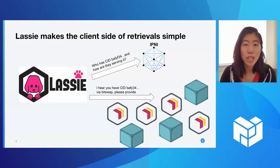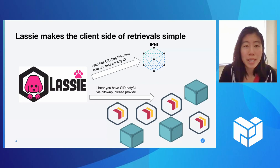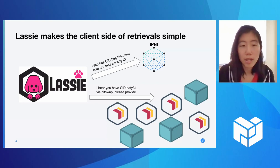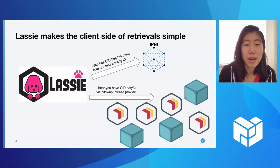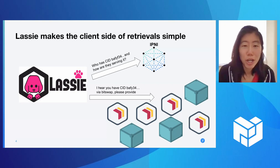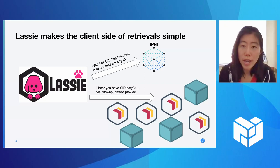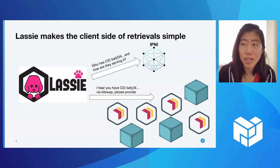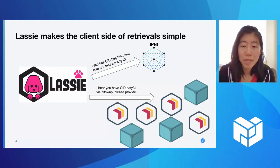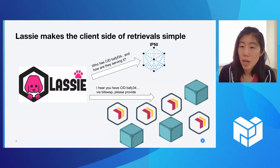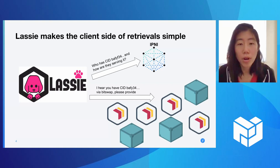To show a bit more about how it works with this diagram — shout out to Lauren — basically on the client side you have the CLI tool, Lassie. How it works right now is that you give it a CID, in this case an example CID like BAFY..., and you just ask Lassie to fetch this CID. Lassie will actually go and query the IPNI, the Interplanetary Network Indexer that Yvonne shared about earlier. IPNI will come back with a group of providers — both IPFS and Filecoin providers — and which protocols they're serving over.